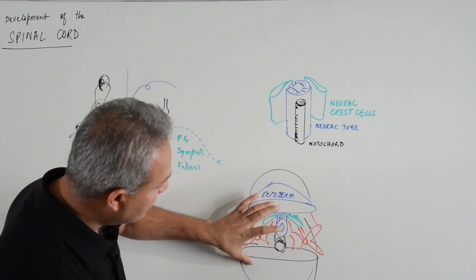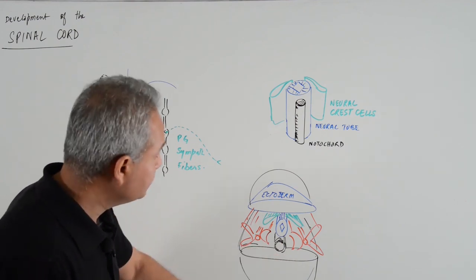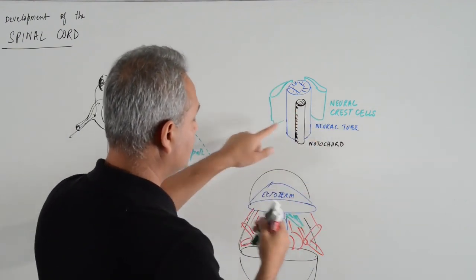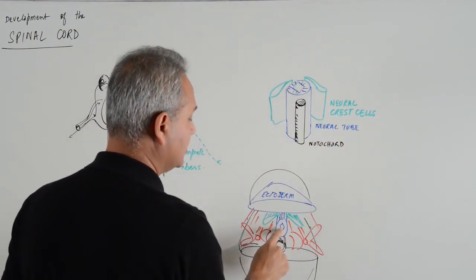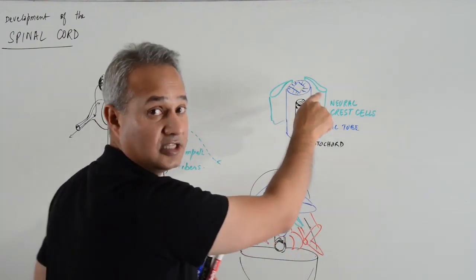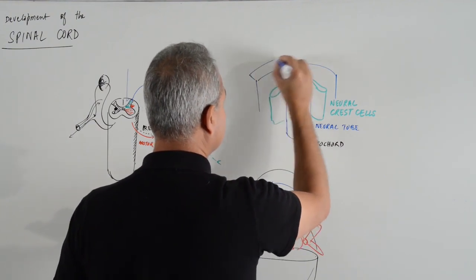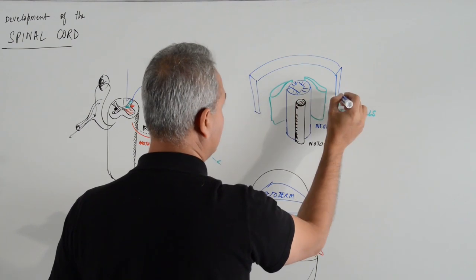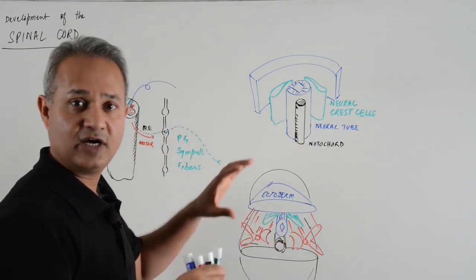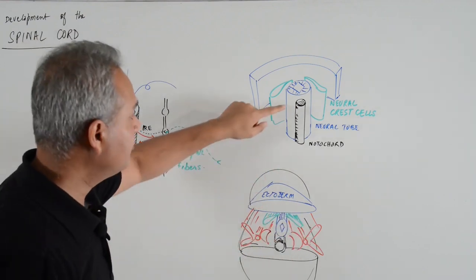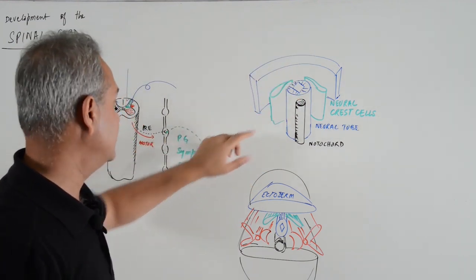Now, if we pick up this developing embryo and stand it up, then remove the endoderm and the mesoderm around it — you are now seeing the notochord. Behind the notochord you are seeing the spinal neural tube, on the sides of the neural tube you are seeing the neural crest cells, and behind that is the ectoderm. Now we are just going to talk about the neural tube in the spinal cord region and see how that forms, along with the neural crest cells, and see how these structures develop.